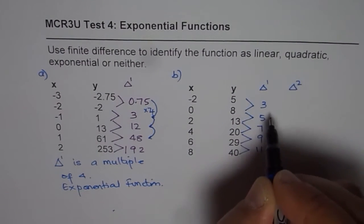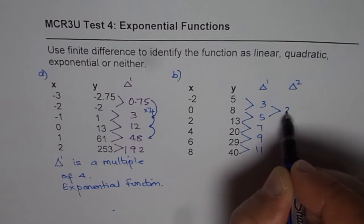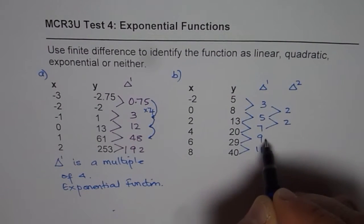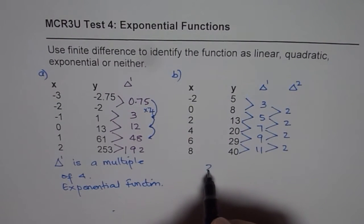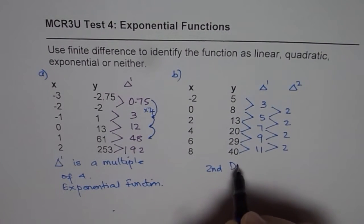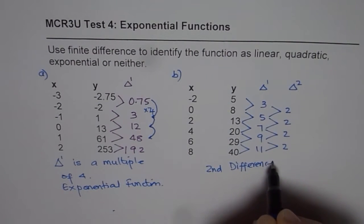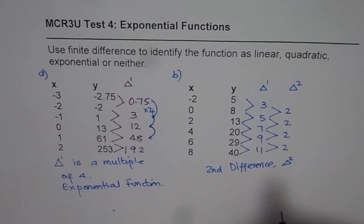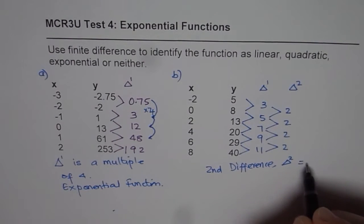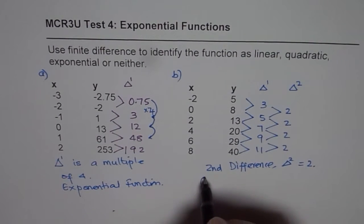Let's take out the second difference, which is 5 minus 3, which is 2. Then 2, 2, and 2. Now, since the second difference is constant, which I write as delta 2, and which is equal to 2, we say it is a quadratic function.